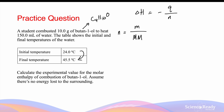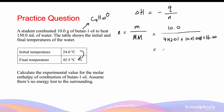4 carbons, 10 hydrogens, and 1 oxygen. So the moles is equal to 10 grams divided by the molar mass of butanol: 4 times by carbon's molar mass, plus 10 times by hydrogen's molar mass, plus 16, which is for oxygen. This gives 0.135 moles of butanol.